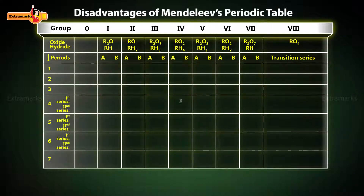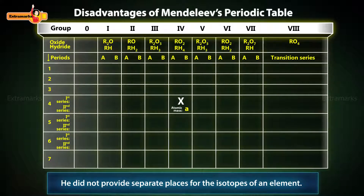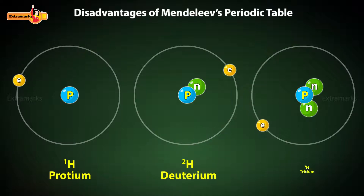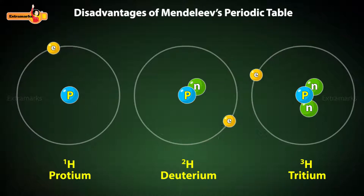Isotopes are the atoms of the same element having different atomic mass or atomic weight. Therefore, according to his law, they should be placed in different groups, but he did not provide separate places for the isotopes of an element. For example, hydrogen has three isotopes — protium, deuterium, and tritium — having atomic masses 1, 2, and 3 respectively, which should be placed differently, but it was not so.